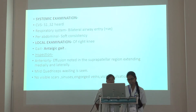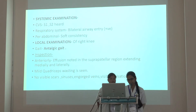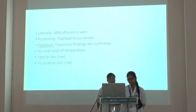Percussion: abdomen of normal consistency. On local examination of the right knee — inspection: anteriorly, effusion is noted in the suprapatellar region extending medially and laterally. Mild quadriceps wasting is seen. No visible scars, sinuses, or engorged veins, and no visible pulsations. Laterally, mild effusion is seen. Posteriorly, popliteal fossa is normal.